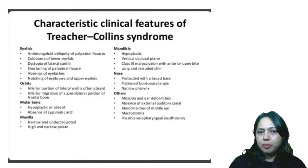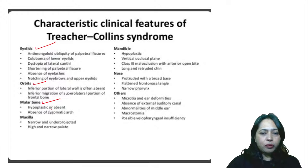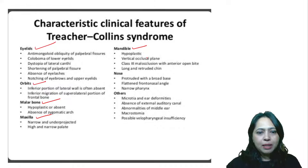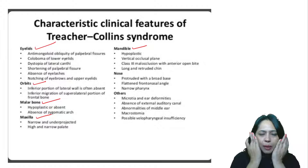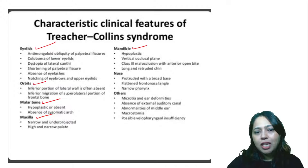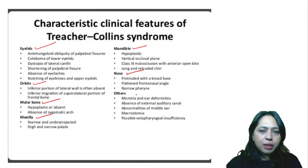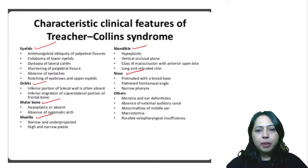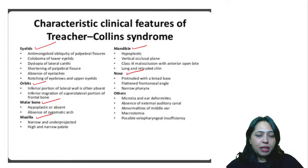More characteristics of Treacher-Collins: the eyelids and orbital floor are affected, the malar bone and maxilla show hypoplasia, and the zygomatic arch is absent. The maxilla shows a high and narrow palate, and the mandible is hypoplastic. Because all surrounding structures show hypoplasia, the nose appears very prominent and projected. There is also microtia with ear deformities, complete absence of the external acoustic meatus, macrostomia, and pharyngeal defects.